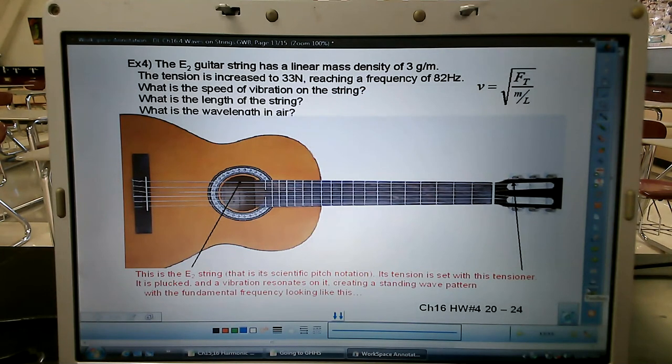The E string, the E2 guitar string, has a linear mass density of 3 grams per meter. In other words, if you cut a meter-long string, put it on the triple beam balance, it would mass out at about 3 grams. The tension is increased to 33 newtons, causing it to reach a frequency of 82 hertz. What is the speed of the vibration on the string? What is the length of the string? And then what is the wavelength in air? So this is a more complete question. This is like that natural progression that I was talking about. So, first thing is, I'm going to use the information given up here to figure out what the speed is on the string.